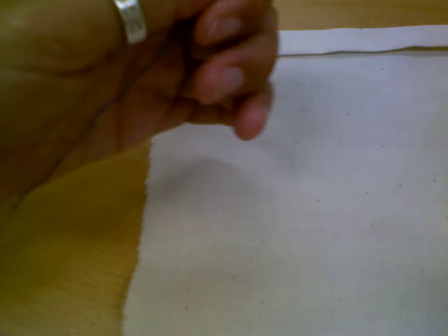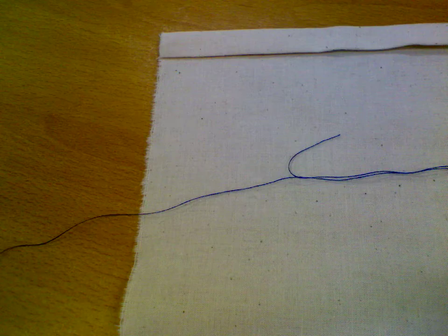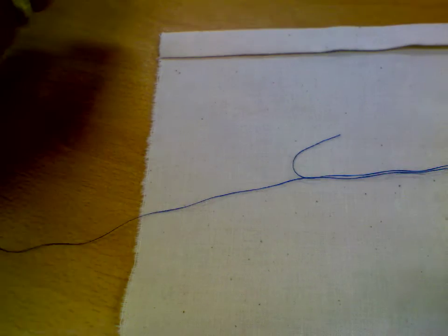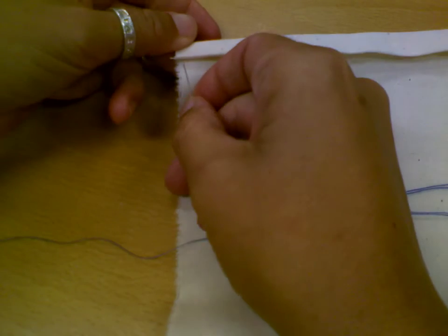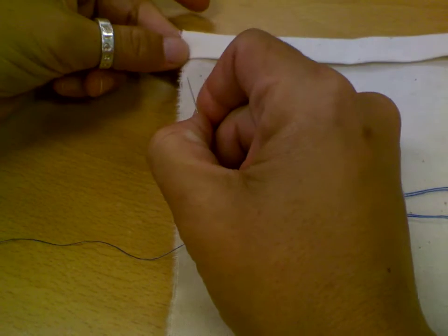Make sure that you have one side of your thread knotted. Here's my ugly knot. Here's the loose end of my thread. I'm going to start inside my fold, like on the inside, so when I fold it back over you can't see the knot.